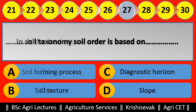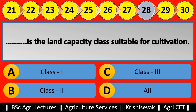Question 28: Blank is the land capability class suitable for cultivation. Options are: (a) Class 1, (b) Class 2, (c) Class 3, (d) All. Right answer is All, option D.